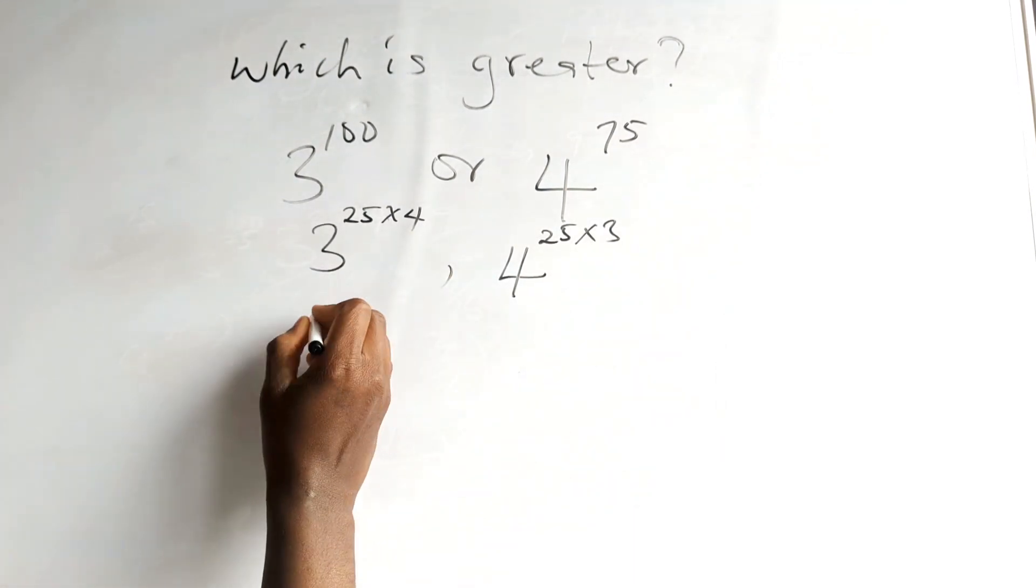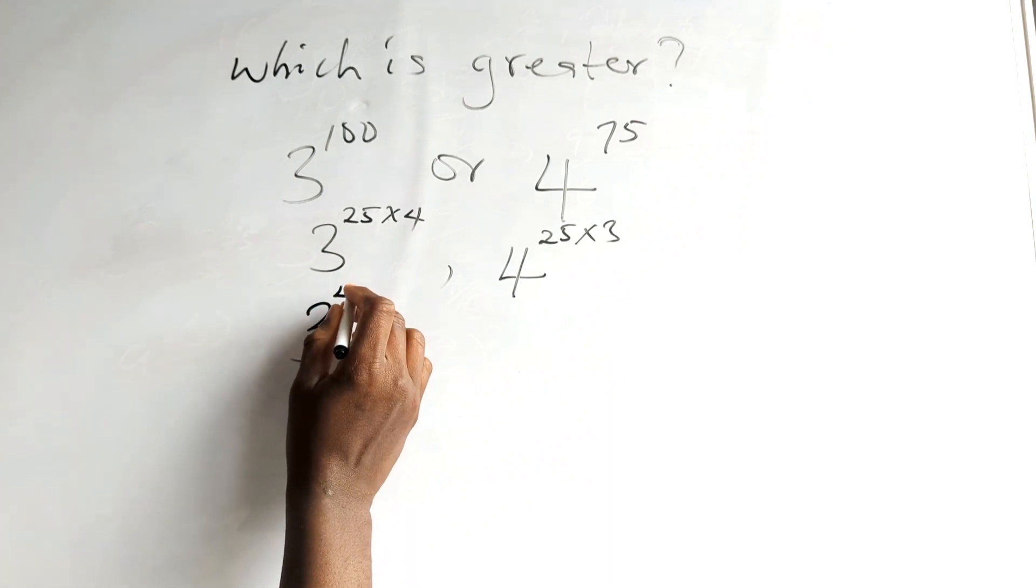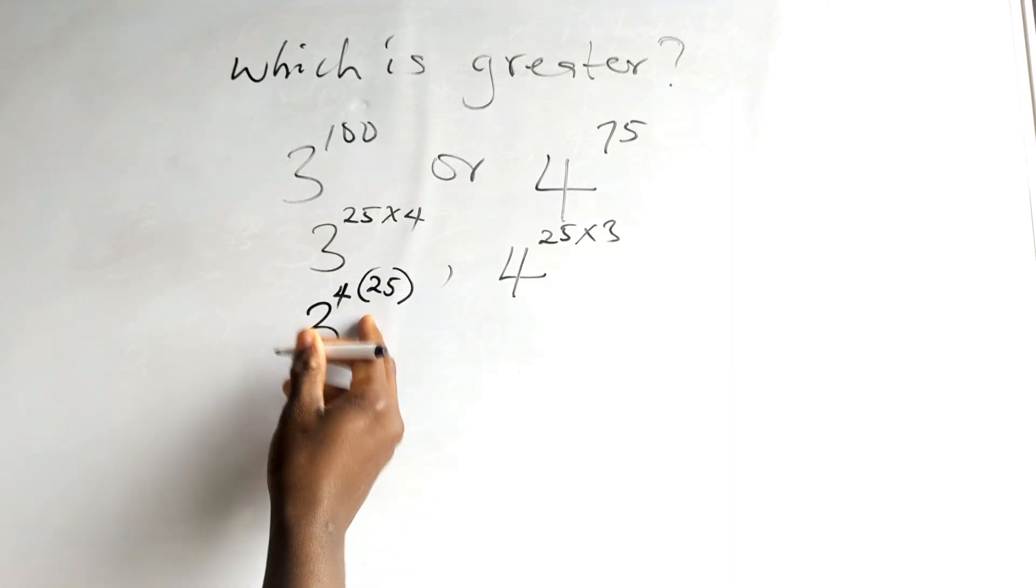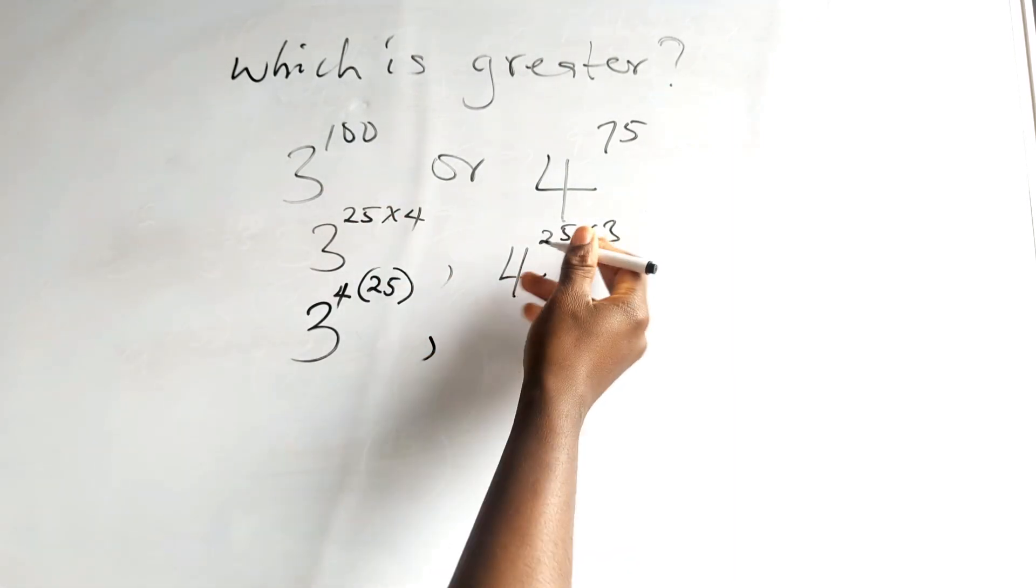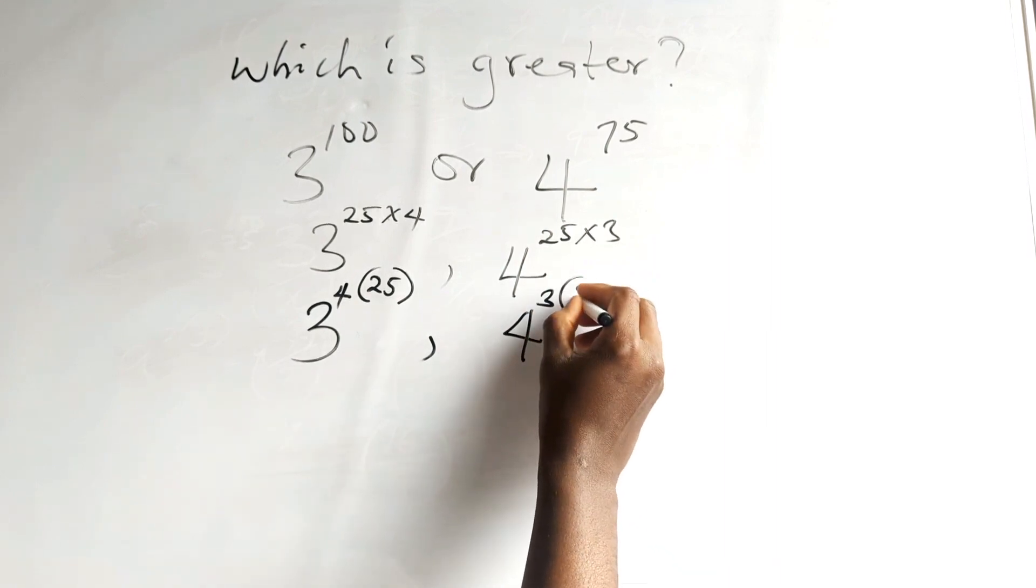This can also be represented as 3 raised to power 4 bracket 25. This is the same thing as this. And this one can be represented as 4 raised to power 3 bracket 25.